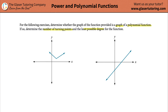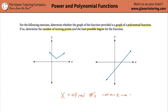In terms of polynomial functions, we have a couple of criteria. The first thing is the criteria for the x values. The x values have to be all real numbers — in other words, the graph has to go from negative infinity all the way to positive infinity.